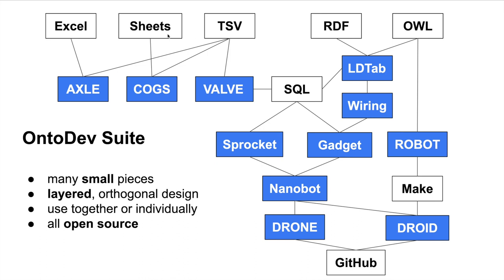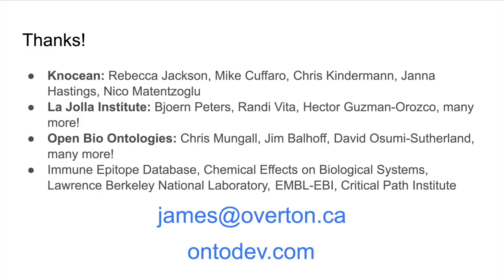So that's the OntoDev suite — taking your data, moving it through these different little tools, each layer orthogonal, use them together or use them separately. All of them are open source, connecting up to your version control tool and back to your data. Thanks to so many people, and please feel free to get in touch by email or on our website. Have a great day.